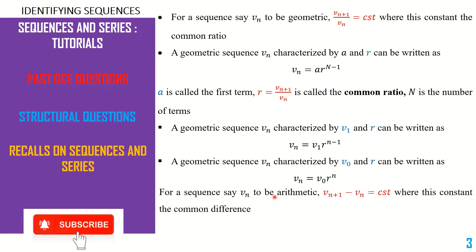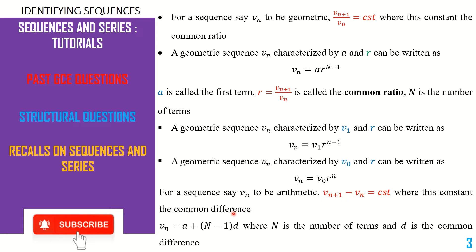For a sequence to be arithmetic, the difference between the (n+1)th term and the nth term must be a constant, called the common difference d. Generally, arithmetic sequences are expressed as a + (N−1)·d, where capital N is the number of terms. If n begins from 1, then Vn = V1 + (n−1)·d. If n begins from 0, the first term is V0, capital N is n+1, and substituting gives Vn = V0 + n·d.